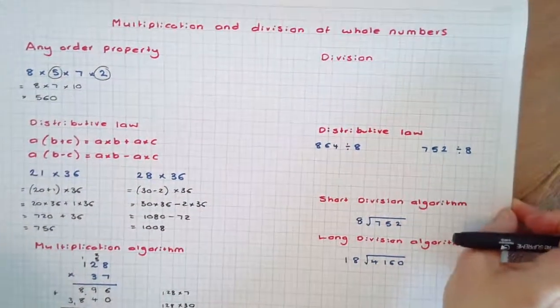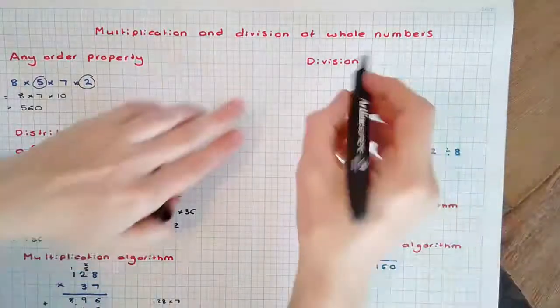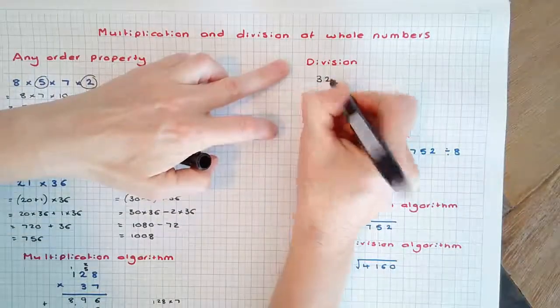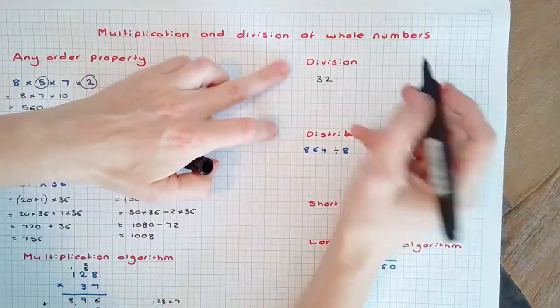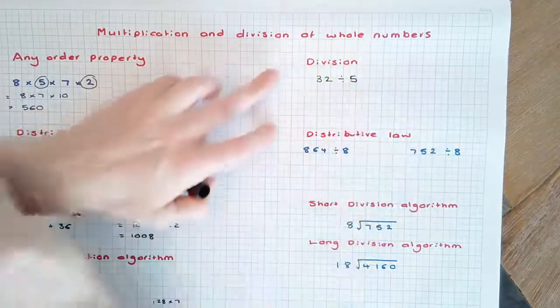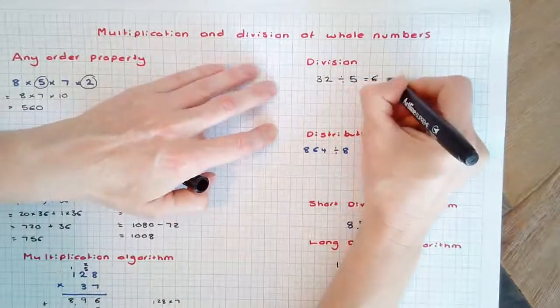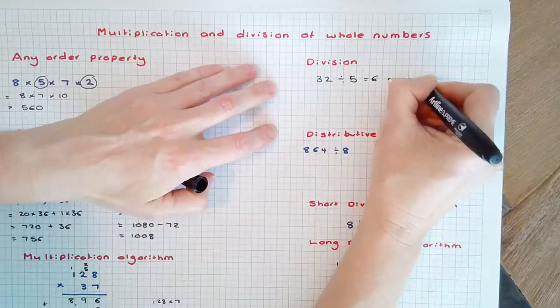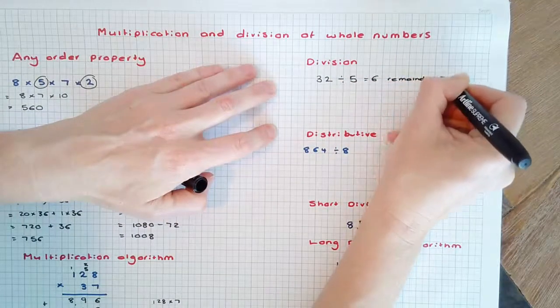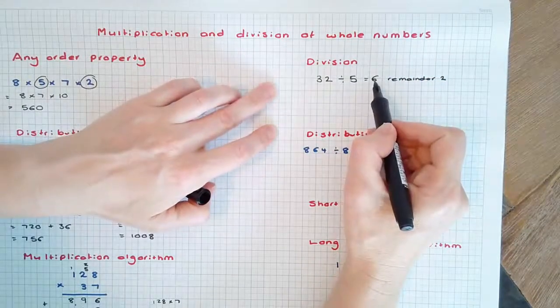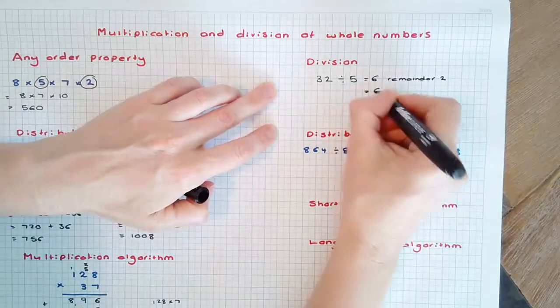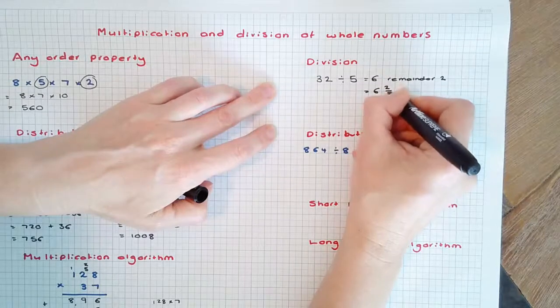Division. If we had 32 cakes shared among 5 people, how many cakes would each get? The answer would be 6 with remainder 2, or 2 left over. Each person would get 6, or 6 and 2/5 each.